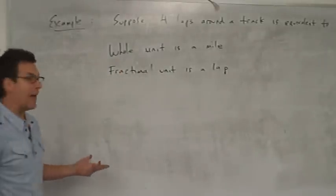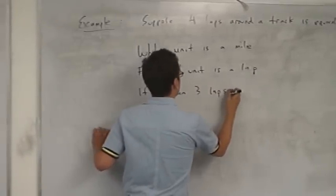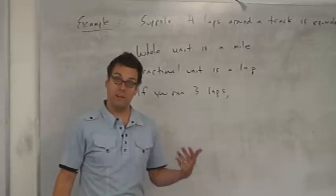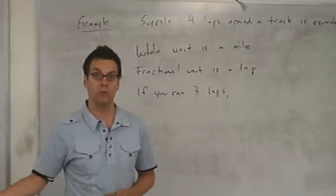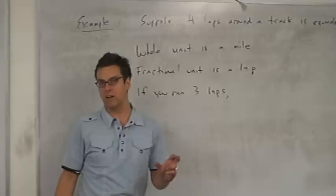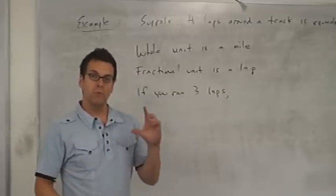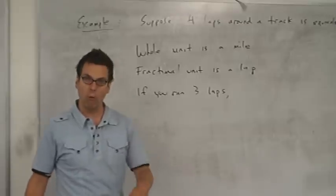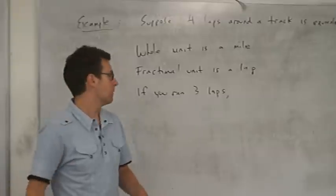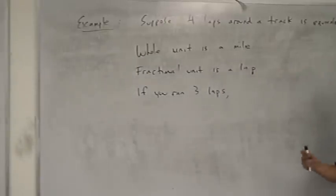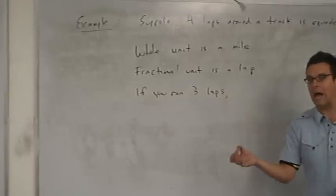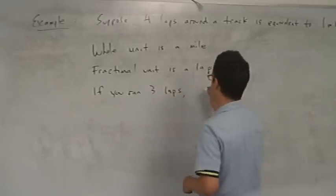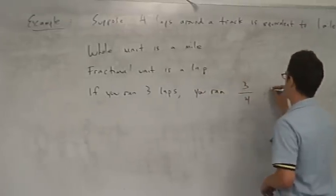Let's say you ran three laps. You didn't quite run a mile, but you still want to describe how far you ran. This is an instance where fractions are needed. The denominator is four, because four fractional units — four laps — make a whole unit, a mile. The numerator is three, because we ran three laps. So the fraction is three-fourths, and if you ran three laps, you ran three-fourths of a mile.